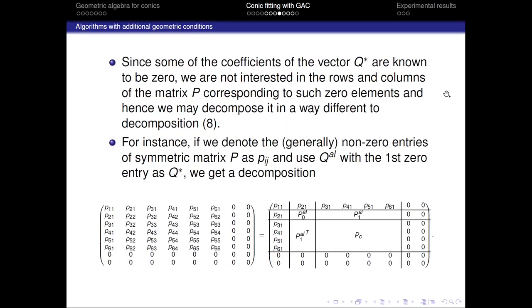Since we now know the vector forms of the conics with additional geometric conditions, we may formulate an alternative optimization problem that is almost identical to the original one. The only difference to the original optimization problem here is that instead of looking for some general conic Q, we are looking for a conic Q star that stands for one of the conics with additional geometric conditions.